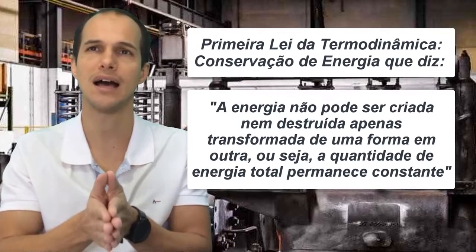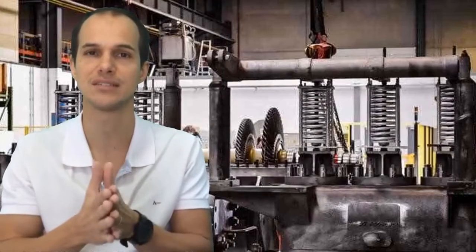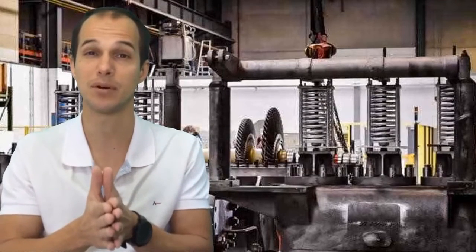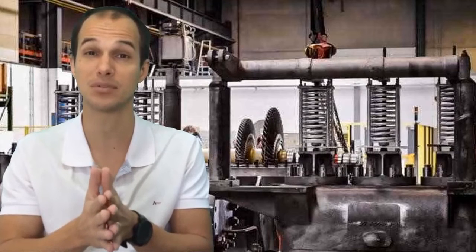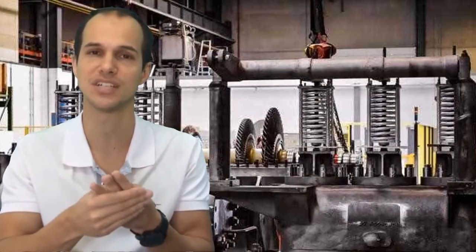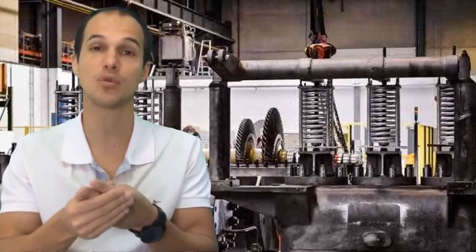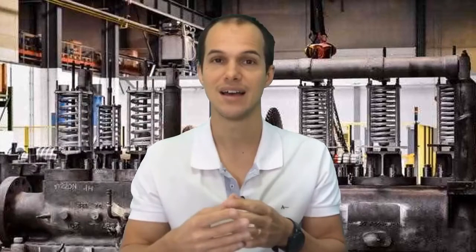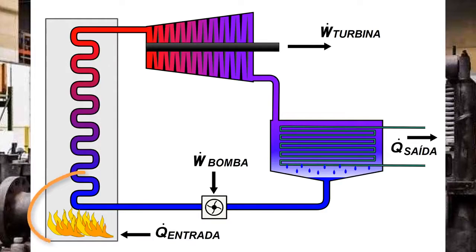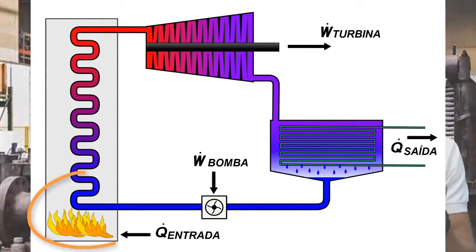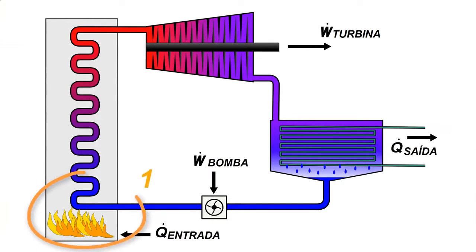The generation of energy using a steam turbine basically takes place through three previous steps — that is, three basic energy conversions. The first transformation is thermal energy into kinetic energy; by heating fuel, in this case water, we make the first conversion of thermal energy into kinetic energy.